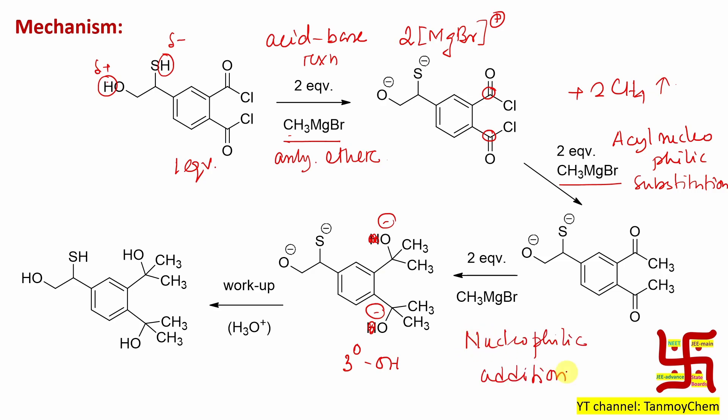Now next step, obviously workup. This O minus will get proton and ultimately it will result this OH. Not only that, these O minus and these S minus will also abstract proton. See H3O plus means H plus plus water. So this H plus will protonate these electronegative centers, means negatively charged centers, and it will produce this molecule.